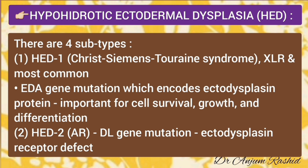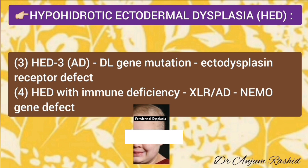The second type has autosomal recessive inheritance and is caused by EDAR gene mutation, which encodes the ectodysplacin receptor protein. The third type of hypohydrotic ectodermal dysplasia is also caused by the same EDAR gene mutation but has autosomal dominant inheritance. The fourth type is hypohydrotic ectodermal dysplasia with immune deficiency, which has X-linked recessive or autosomal dominant inheritance and is caused by NEMO gene mutation.